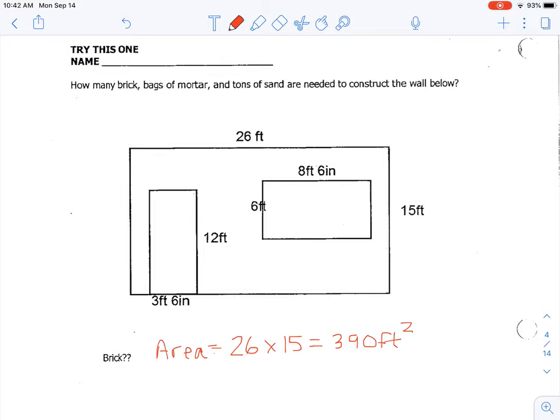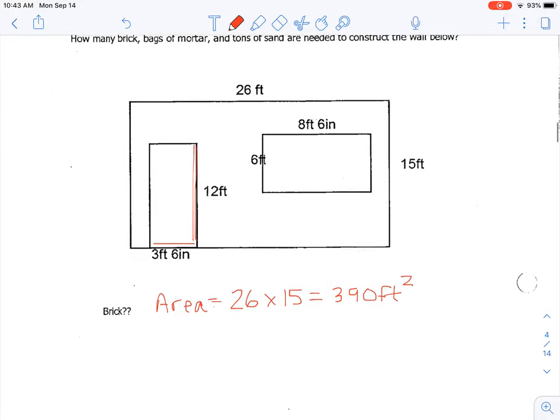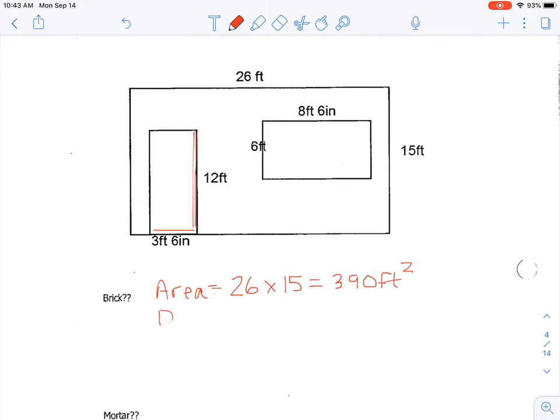door would be 3 feet 6 inches by 12, but we made a little cheat sheet that told us what part of a foot 6 inches was. So for the door, we're going to use that little cheat sheet and know that the door is 3.5 by 12, which equals 42 feet squared.